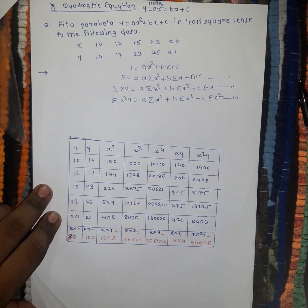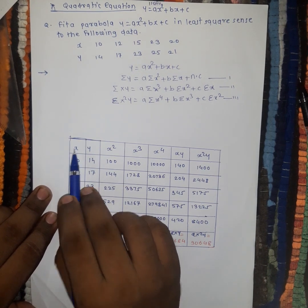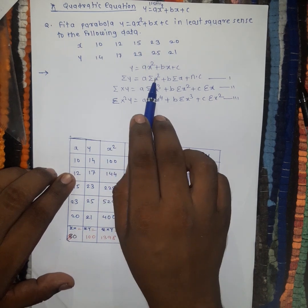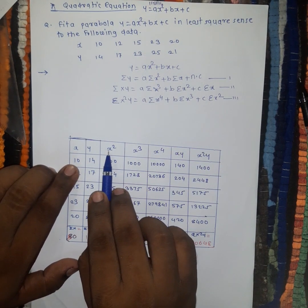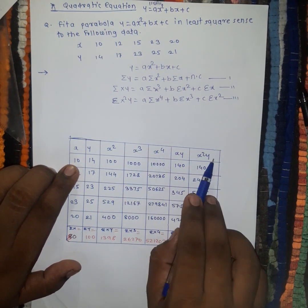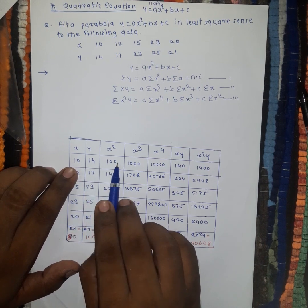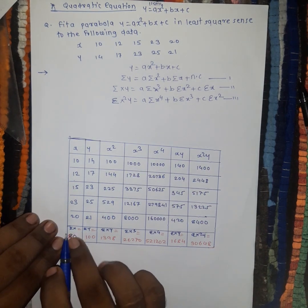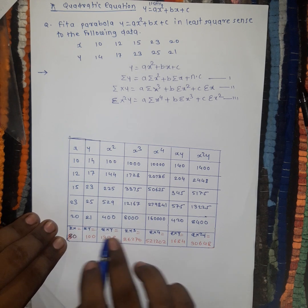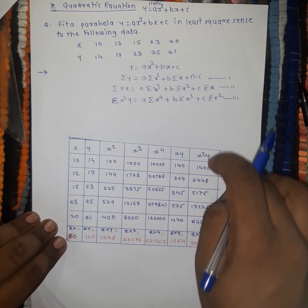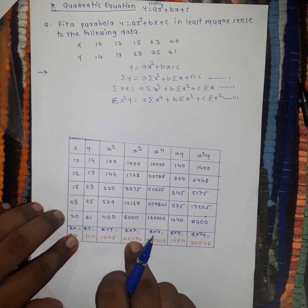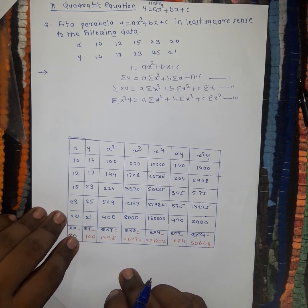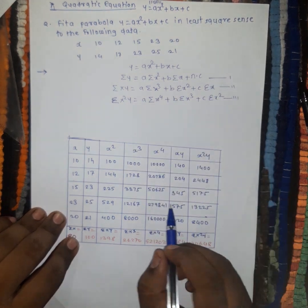The x column and y column are already provided in the example. Next we compute x squared, then x cubed, and so on. For example, 10 squared is 100, 12 squared is 144, and so on. We then sum all columns — summation x, summation y, summation xy, and so on. All values have been calculated and we now substitute them into the three equations, which will be solved using a calculator to find a, b, and c.